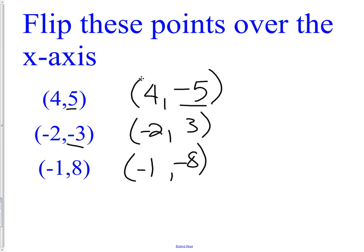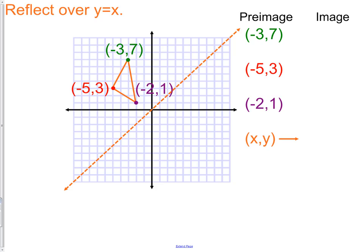Next, we have flipping over the line y equals x. This one is a little bit more challenging. And what actually happens with this is you change both of your coordinates. You change both the x and the y. Whoops, I actually got ahead of myself. I'm doing the next one. Here we go. There we go. That's better. You flip the x and the y. So all that happens is they change spots.